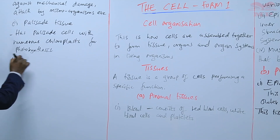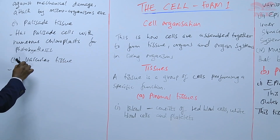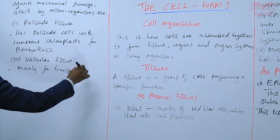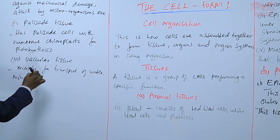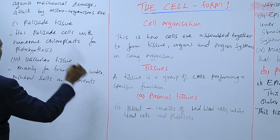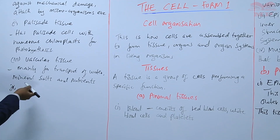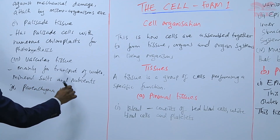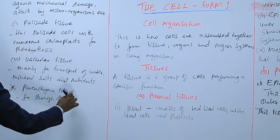There is the vascular tissue, which is mainly for transport — transport of water, mineral salts, and nutrients. We also have parenchyma tissue, which is for storage of food and water.